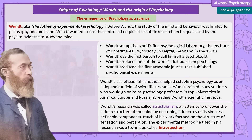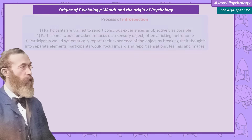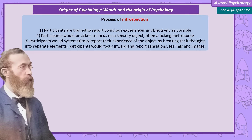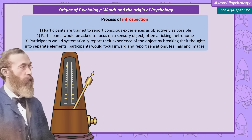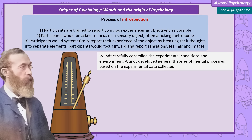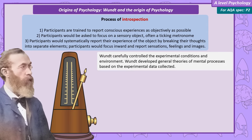The method Wundt used in his research was called introspection. Wundt would first train participants to record their conscious experience as objectively as possible, and then ask them to focus on a sensory object — often a ticking metronome — and ask them to systematically report their experience by breaking their thoughts down into separate elements: sensations, feelings, and images. Wundt was careful to control these studies, controlling both the experimental conditions and the environment, and was able to record patterns of behaviour that he could use to develop general theories of mental processes.